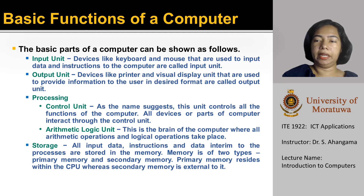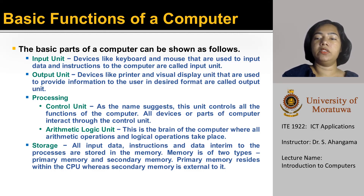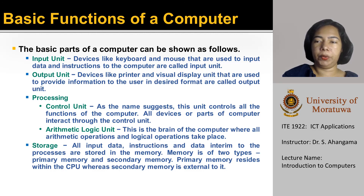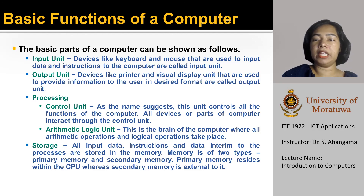All input data, instructions and data are stored in the storage. There are two types: primary memory and secondary memory. The primary memory resides within the CPU, whereas secondary memory is external to it. We will be discussing these individual components separately in the next few lessons.